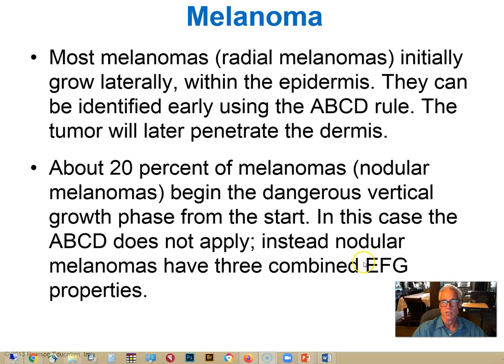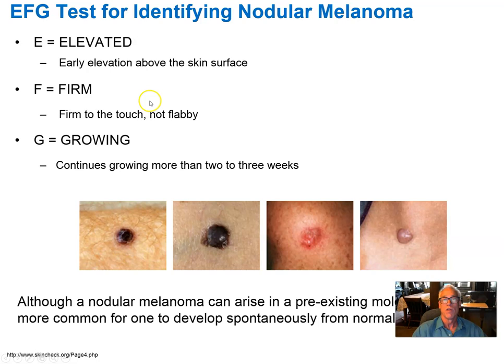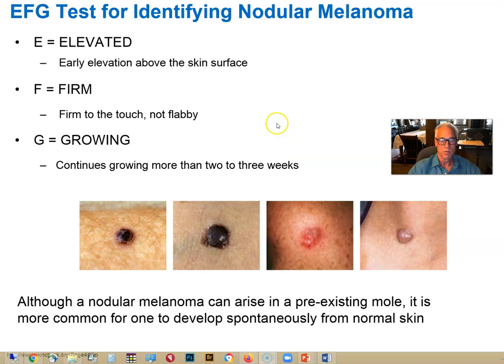The ABCD rule won't apply to nodular melanomas. Instead, the EFG properties are used: Elevated — a rounded elevation in a mole or pigmented patch is a possible sign of danger; Firm — they tend to be hard when they're growing; and Growth — constant change in dimensions signals something bad. Because of the fast penetrating nature of these melanomas, they should be very aggressively treated.